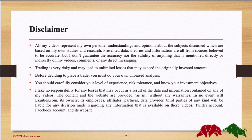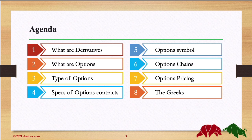So what's on the menu today? We are going to see what we mean by Derivatives, what are Options, types of Options, the specifications of Options Contracts, Option Symbols and how to read them, what we mean by Options Chains, Options Pricing, and finally the Greeks. So as I said, it's going to be a long video. Let's start.